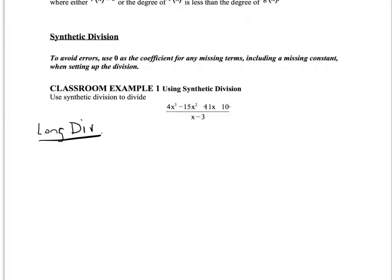Let's say we were going to divide 7 into 9,825. We would begin by asking ourselves: 7 will go into 9 how many times? Well, one time, so we put a 1 above the 9. Then what we wrote on top we multiply times the divisor — 1 times 7 is 7. We then subtract: 9 minus 7 is 2. Bring down the next digit and go again — 7 goes into 28 four times.